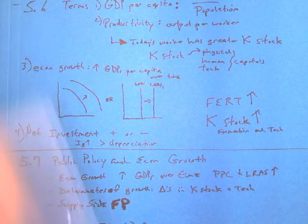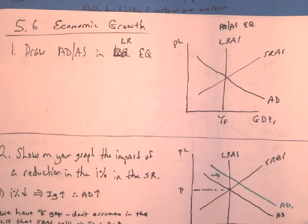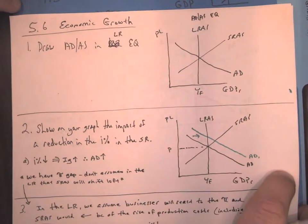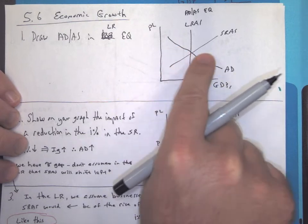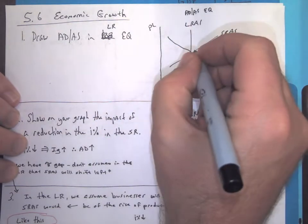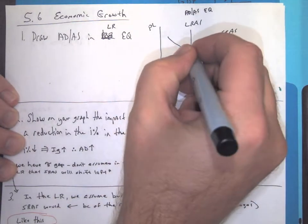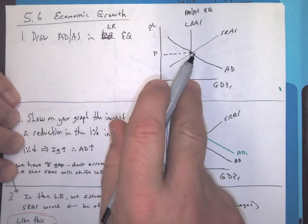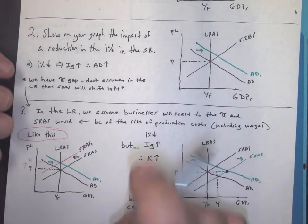Now, first thing I want you to do is we're going to look at economic growth in the short run or how investment impacts the short run. So I want you to pause this video and draw the long run aggregate supply, aggregate demand, and short run aggregate supply all in equilibrium. That's where all three cross. And I need to add my P for price level. So once you have this one drawn up, pause this and come back to it. Okay? All right.